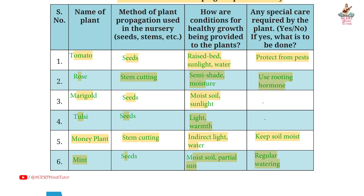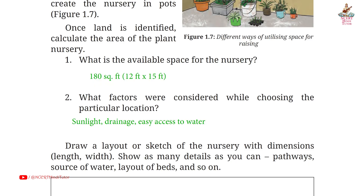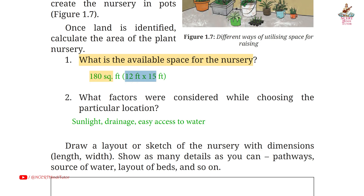You can note this table down. Page 12, Question 1: what is the available space for the nursery? Answer: 180 square feet — 12 feet by 15 feet.